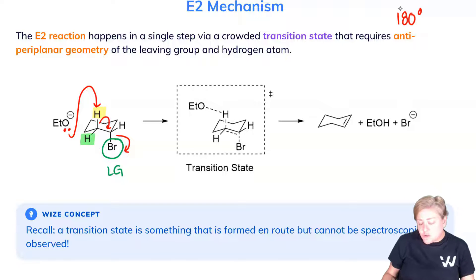Here I've shown you the transition state as indicated with this little double dagger. That's what that means. And you can see this geometry in this 180 degrees between the hydrogen and the bromine. This gives us our final product, the alkene here, as well as the ethanol and the bromide.